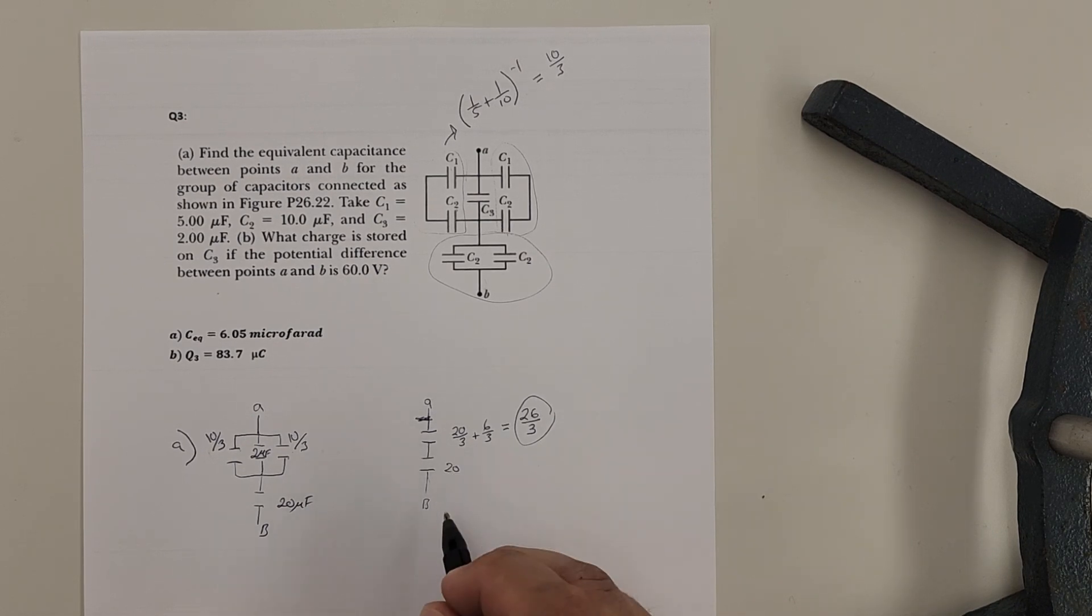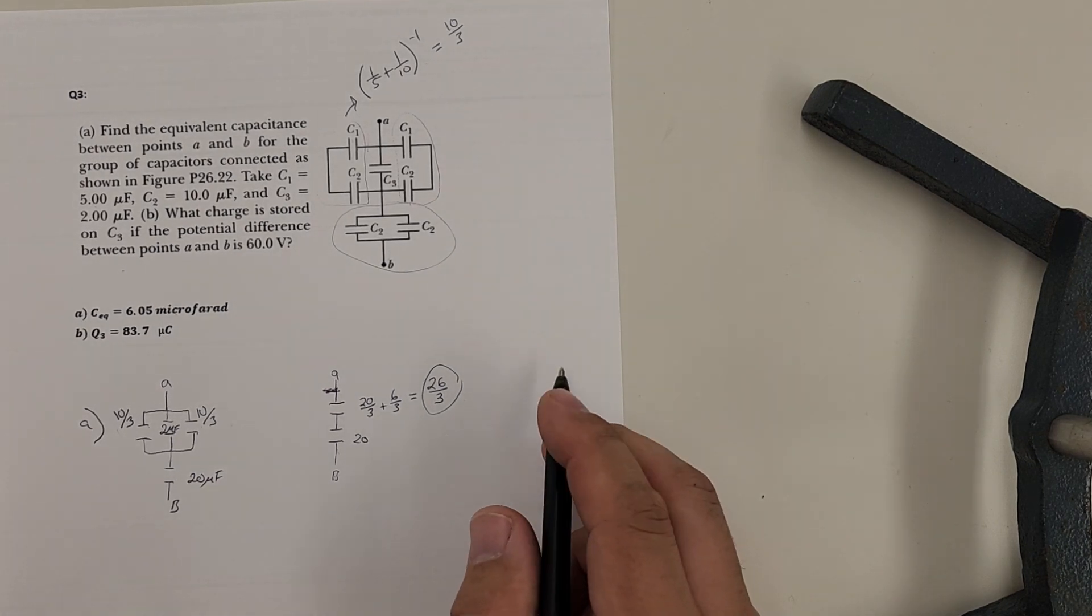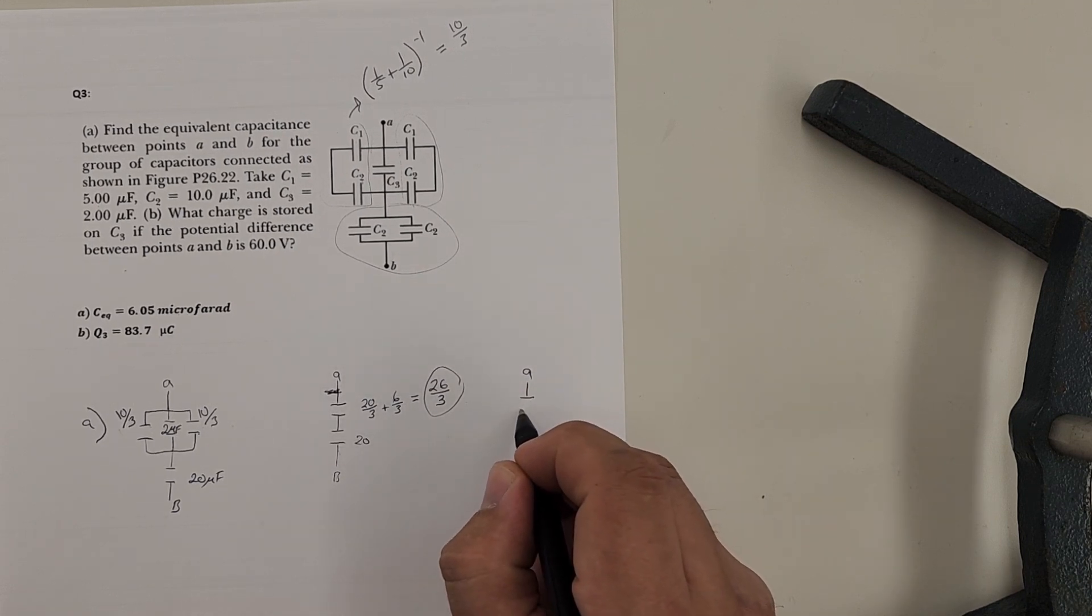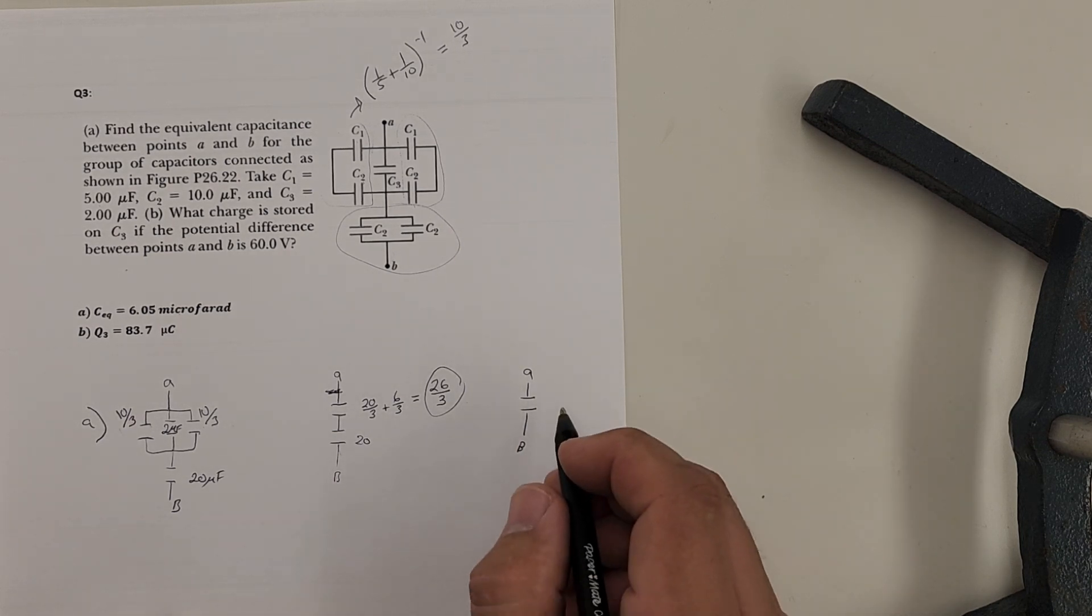And this one on the bottom here is still just twenty. That one's just hanging out for us. Okay. Now my last step here, now I can combine. I just have these two. I can just combine those into one. Okay. And they are in series.